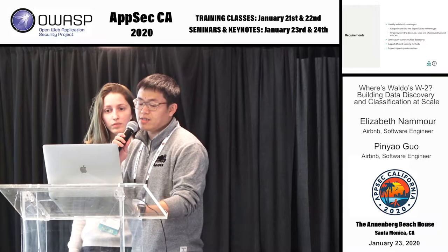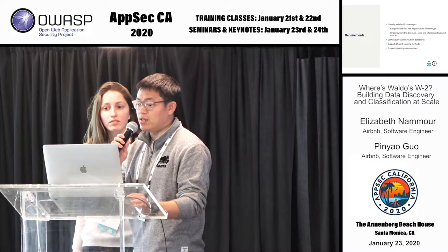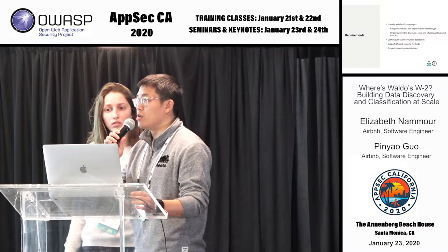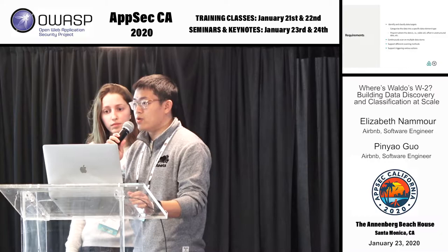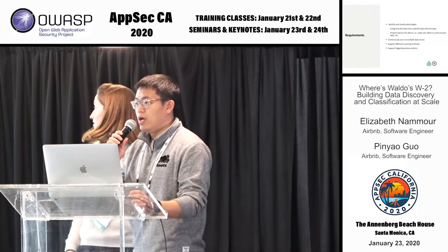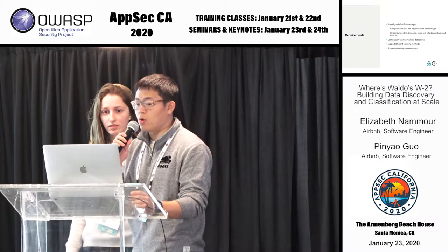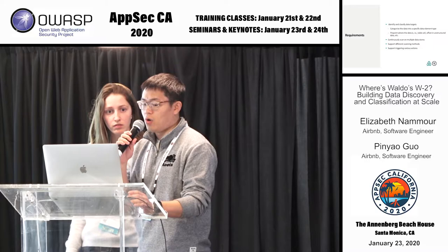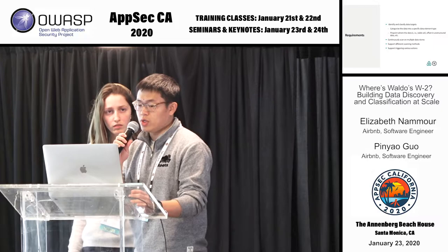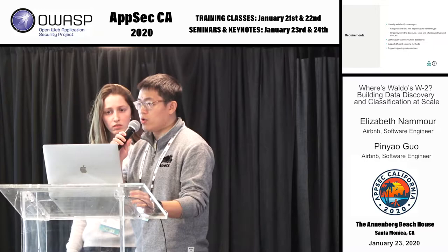As data elements have different formats, we also want to scan them with different scanning methods. For example, we might use regular expressions to recognize emails and phone numbers because they have certain formats. But for some other data elements like addresses, they can have very different formats for different countries and languages, so we need multiple scanning methods to support all these data elements. Last but not least, the whole purpose of data classification is to take actions, which means the platform should support triggering various actions such as sending emails to stakeholders or creating a ticket for someone to resolve.